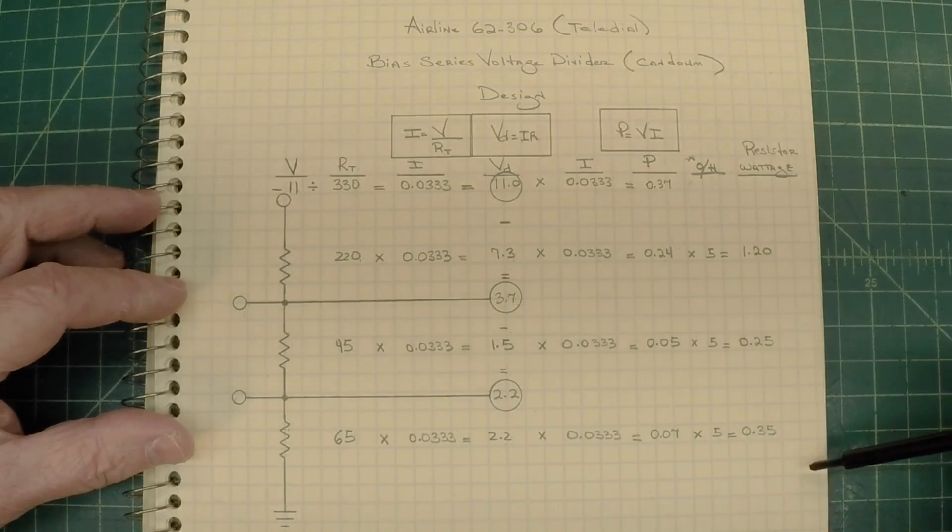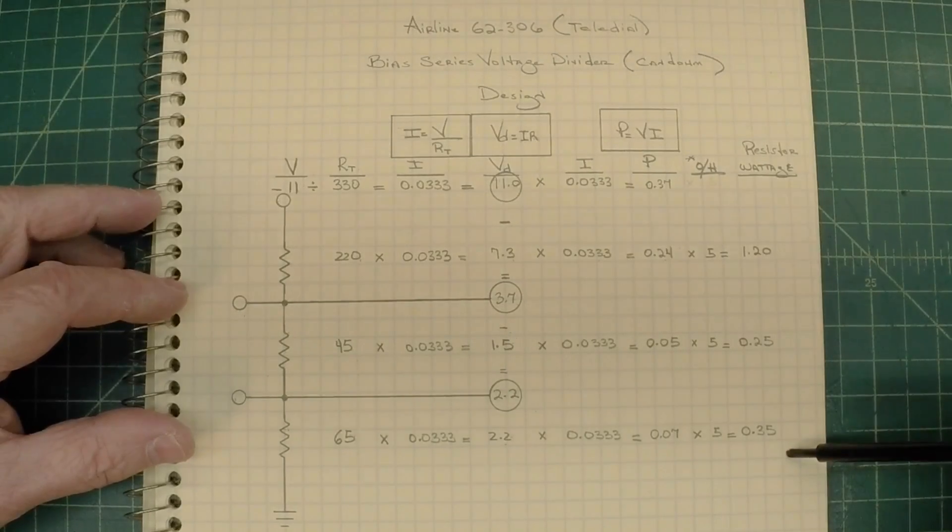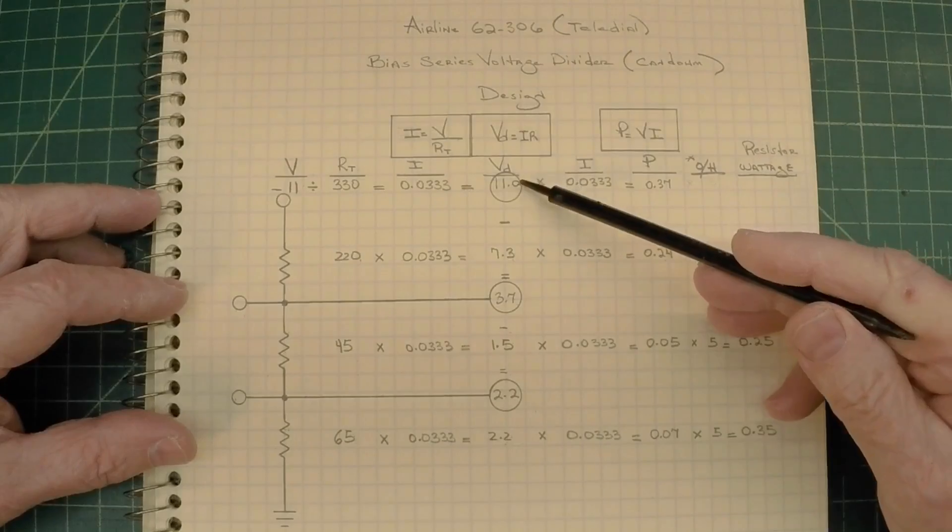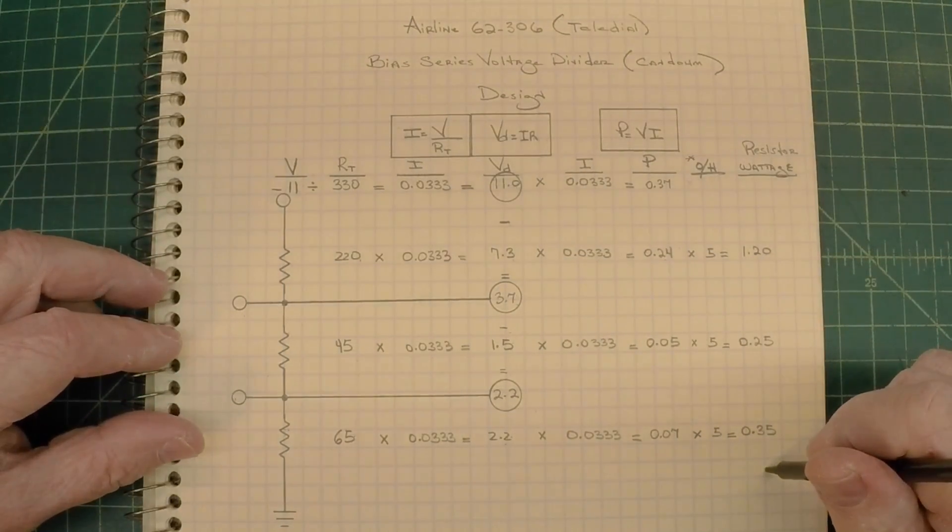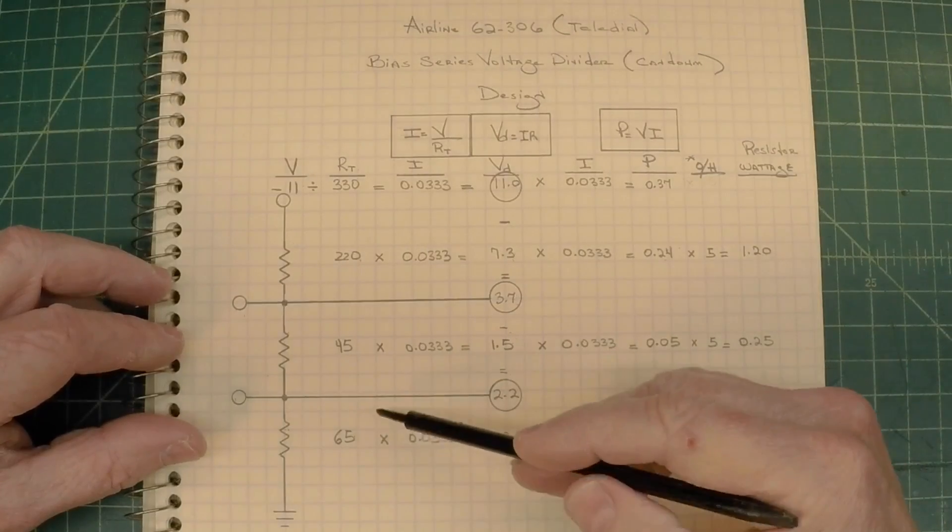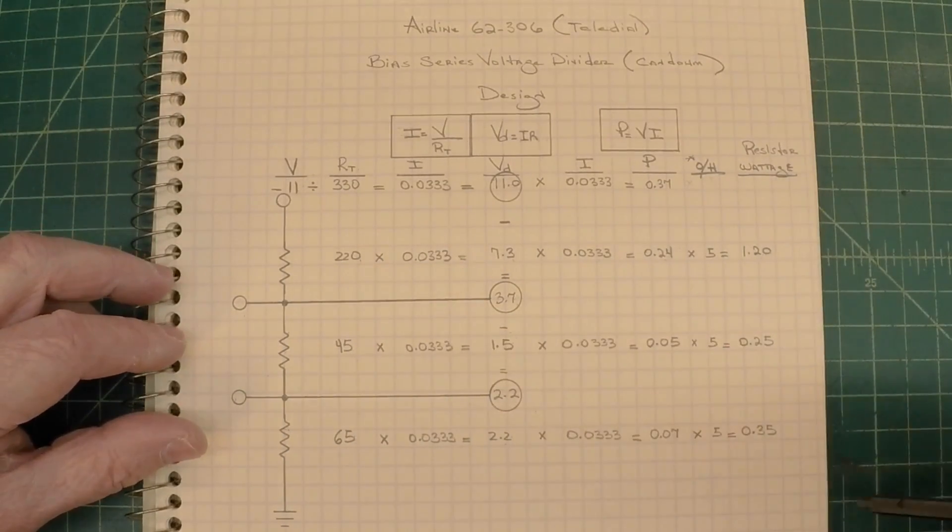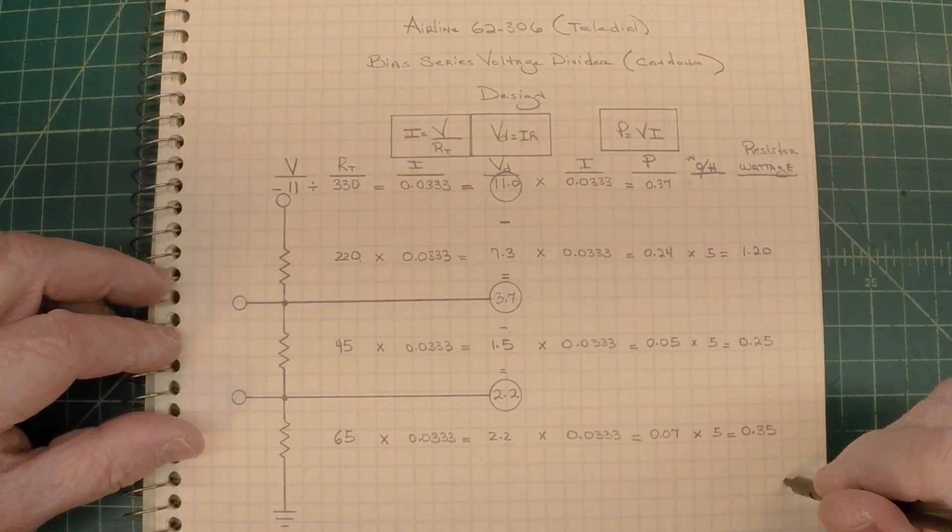So I hope that's helpful, folks. That's the basic math on how to figure things out. And you can see the numbers that we've called out here closely mirror what we had off of the can dome testing, which those values are a little north or south of what's called out on the schematic, but still within 20% of their original design.